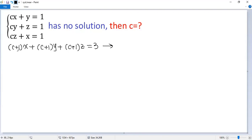We can take the common factor c plus 1 out. So we get c plus 1 times x plus y plus z equals 3.